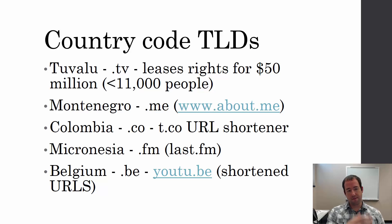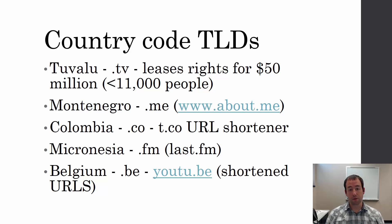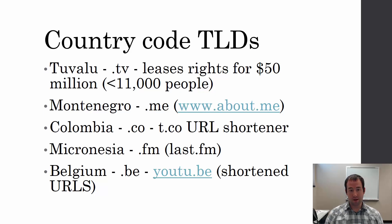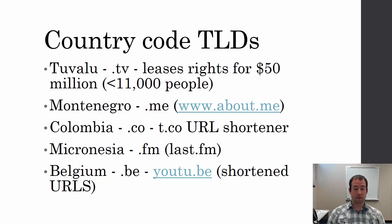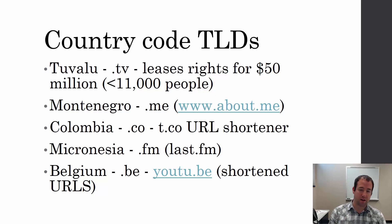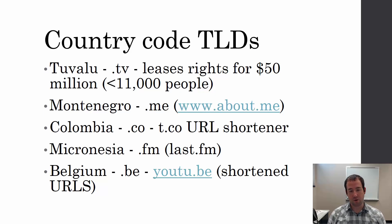We also have Montenegro, which got .me — and that's popular. Colombia got .co, which a lot of people think is just a shorter version of .com. It's used for things like Twitter's URL shortener, t.co.